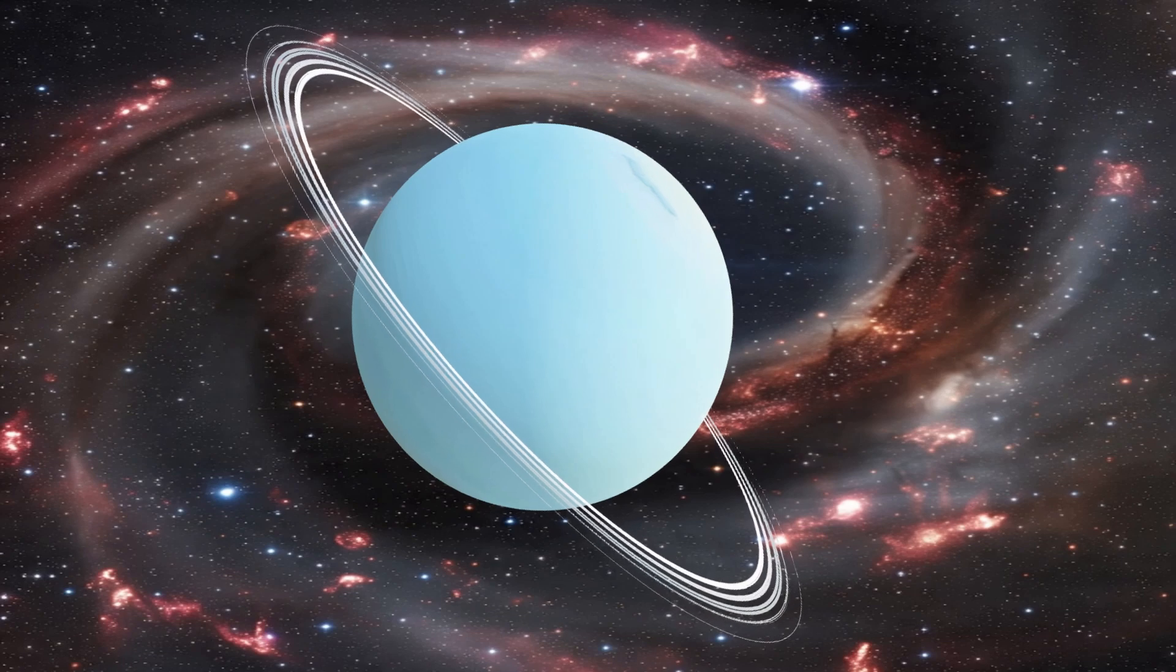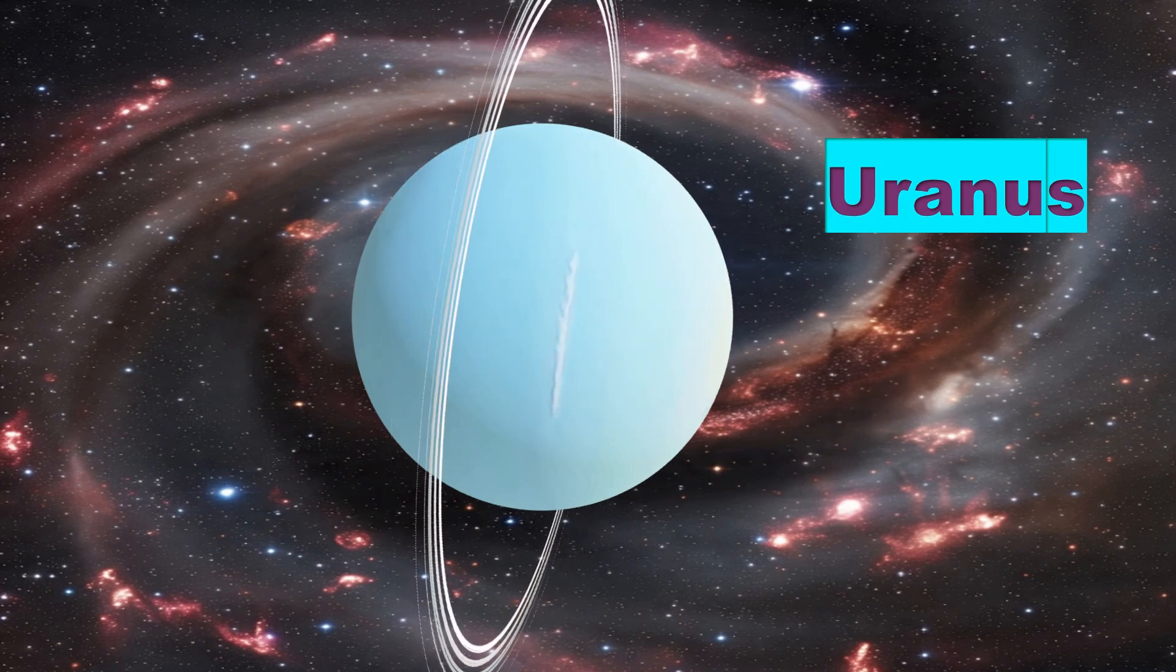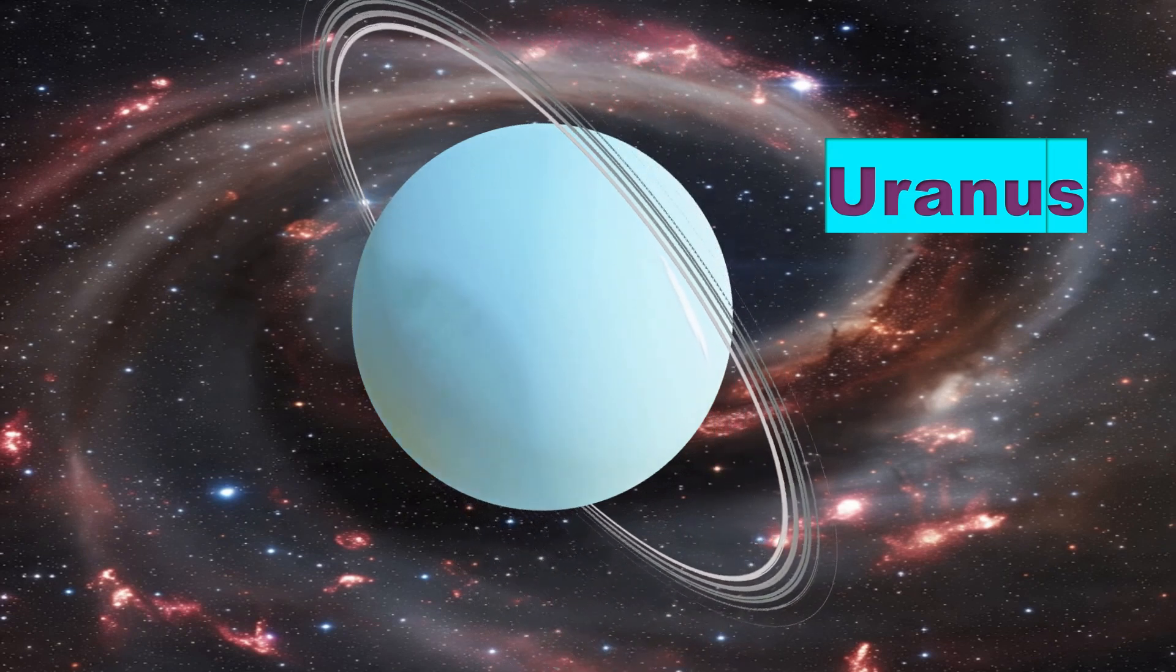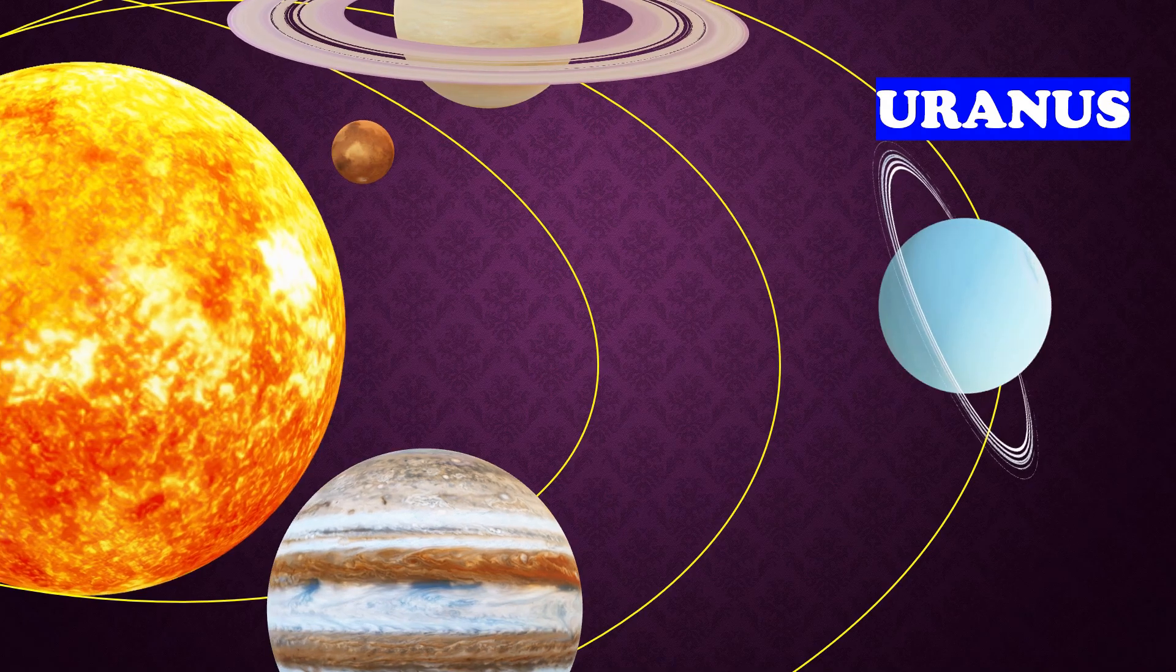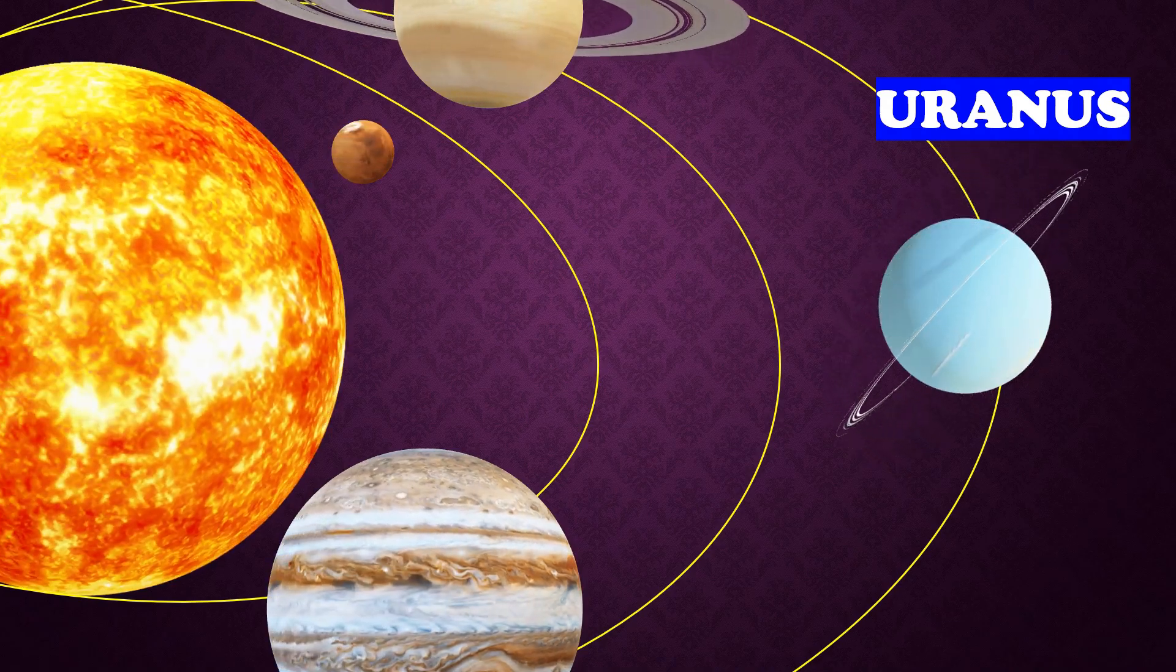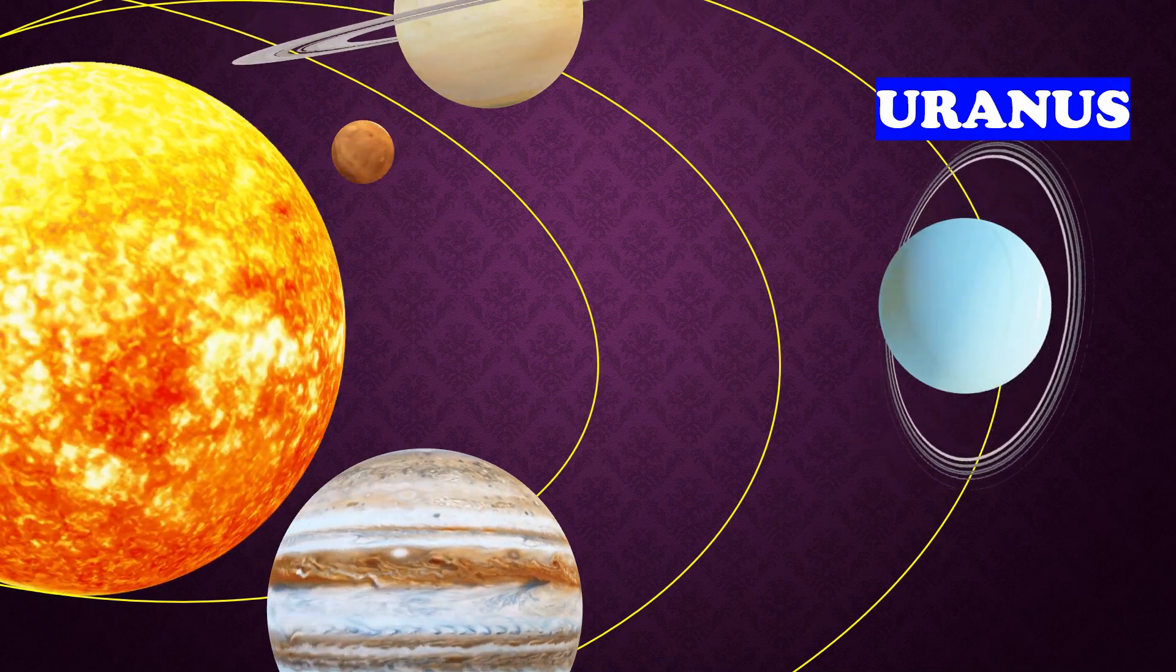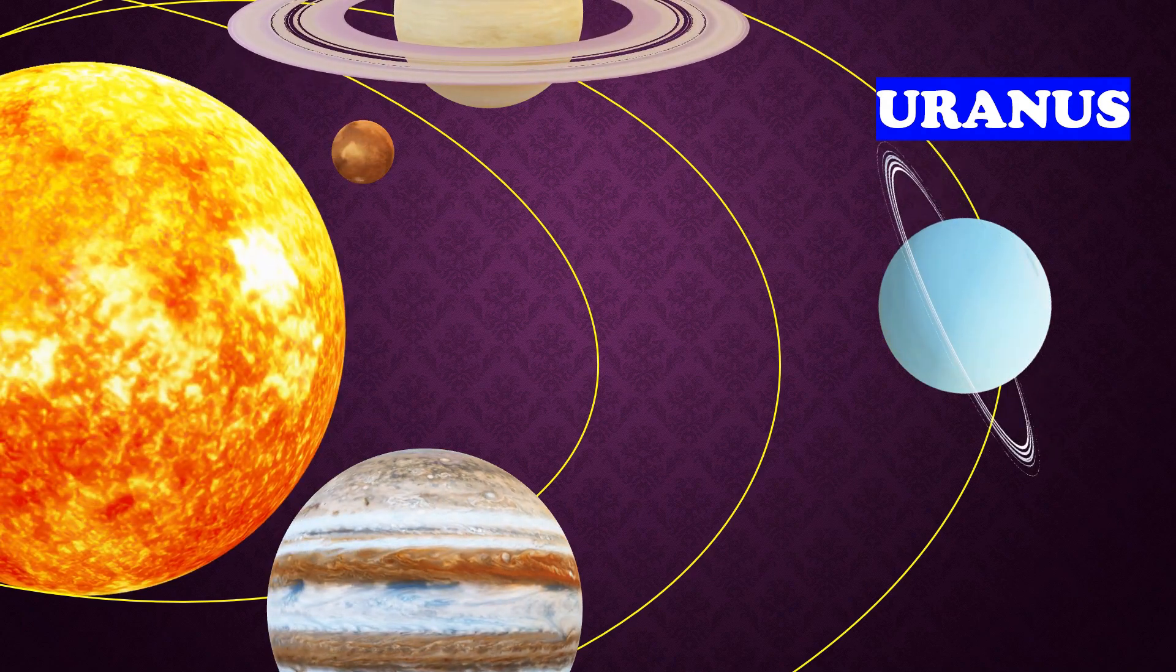This is Uranus, the seventh planet of the solar system. It is known for its unique blue-green color which comes from the methane in its atmosphere. Uranus has a distinct feature: it rotates on its side. This planet is extremely cold and windy. Light from the Sun takes about 2 hours and 40 minutes to reach Uranus.